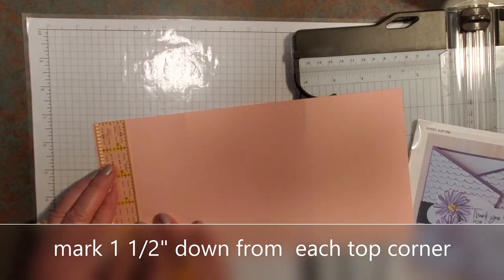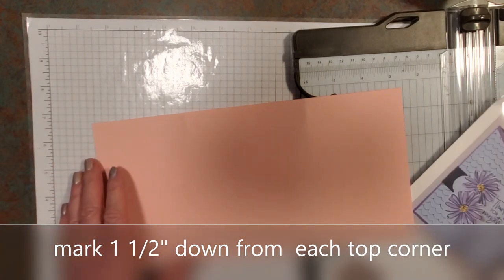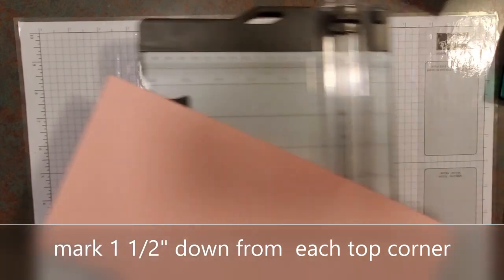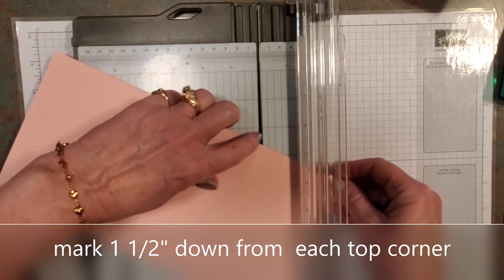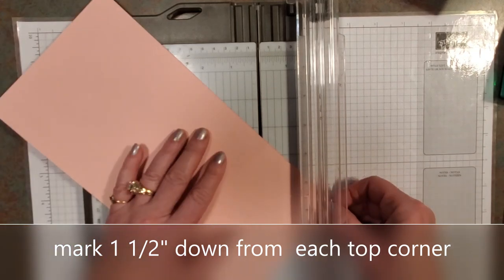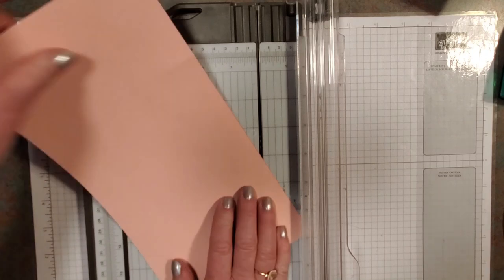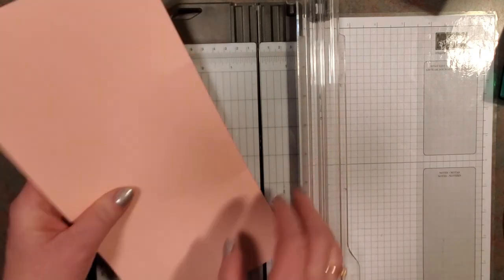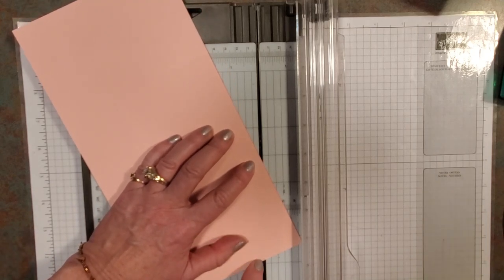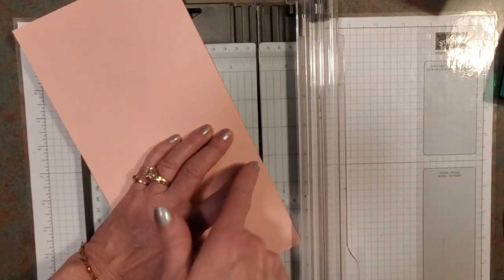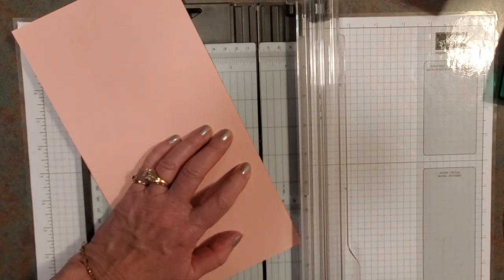So you're doing the same measurements and angles on both sides. Correct, so 1 1/2 down. So what we're going to do now, bring this back in. So that little channel I talked about, you put that right in this channel where you're going to cut, and then you turn your card to your point, keeping an eye on that little channel.